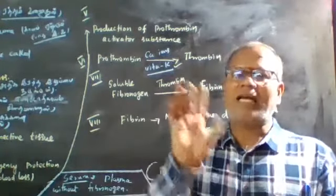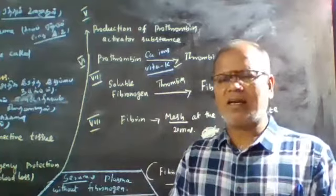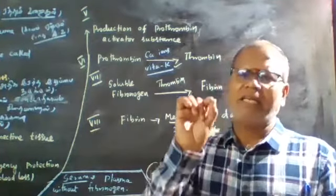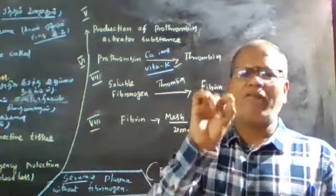Calcium ions act as a cofactor in this process. Vitamin K is needed for the production of prothrombin.